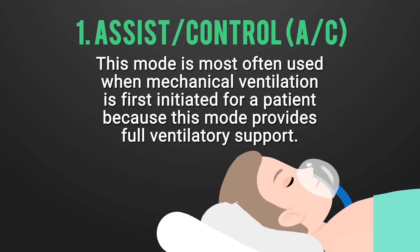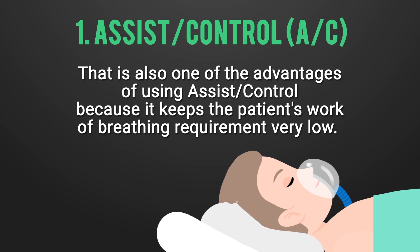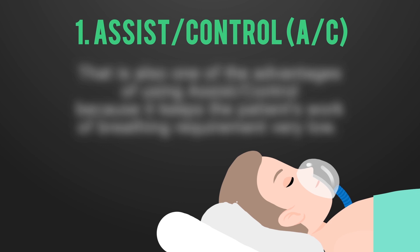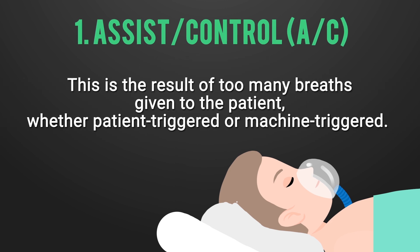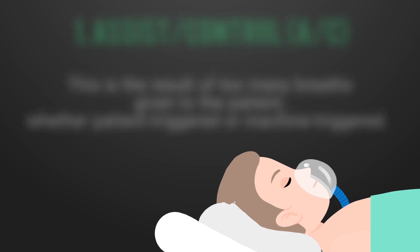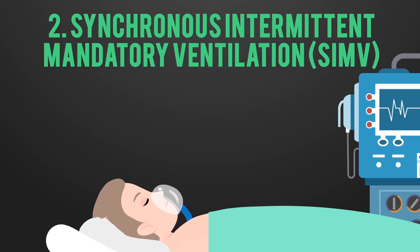Assist Control is most often indicated when mechanical ventilation is first initiated for a patient, because this mode provides full ventilatory support and keeps the patient's work of breathing very low. However, one major complication of Assist Control is hyperventilation, which results in respiratory alkalosis — the result of too many breaths being delivered, whether patient-triggered or machine-triggered.